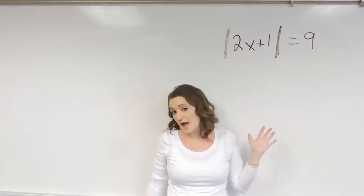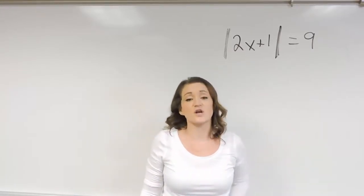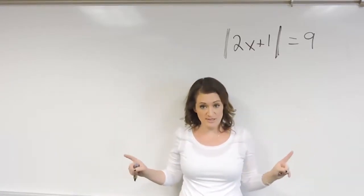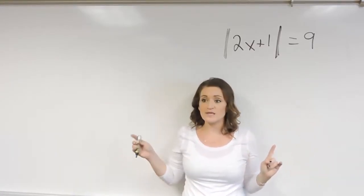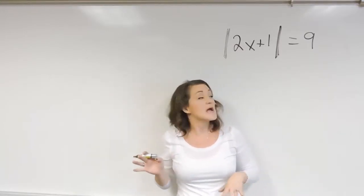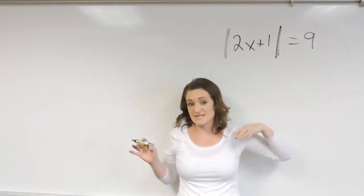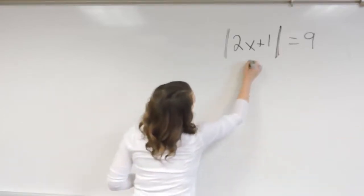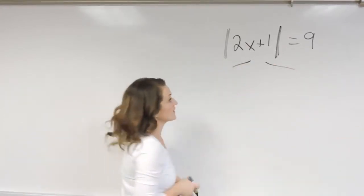So when we solve absolute value equations, first off, you're always going to have two equations. You take one equation and you take into consideration the positive side of it, and then the other equation represents the negative side. So this is the way that looks. We're going to split this into two equations.